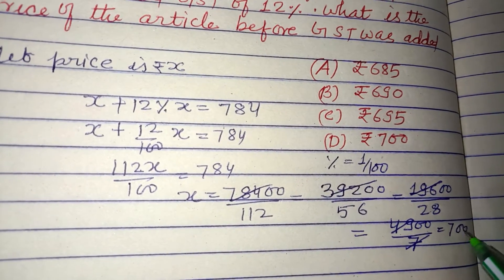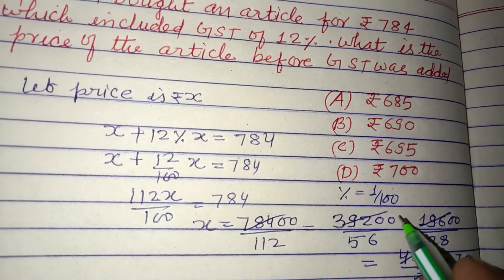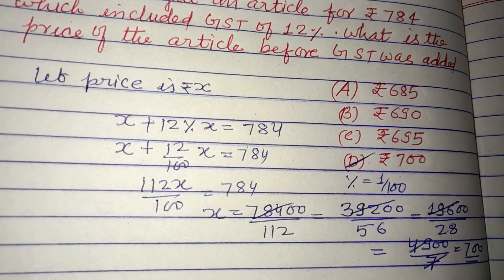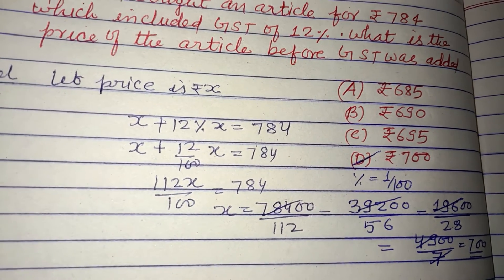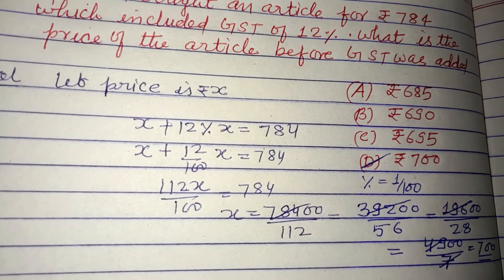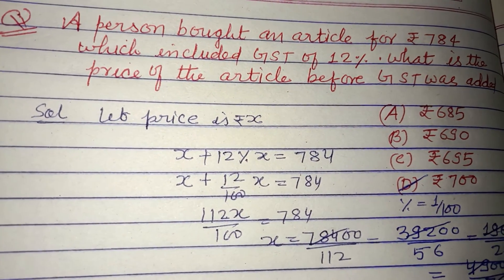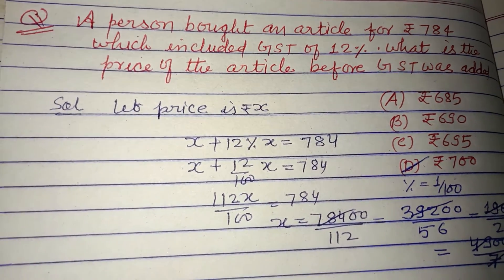So, 700 is the correct answer, which is found in option D. D is correct. I hope you got it. Please like the video, subscribe the channel. Thanks for watching.